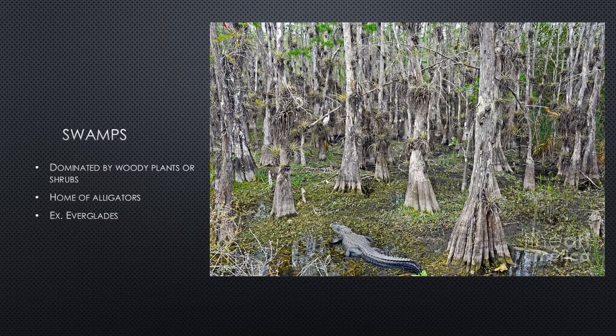Another type of wetland is swamps. Unlike marshes dominated by grasses, swamps are dominated by woody plants or woody shrubs. An example is the Everglades in South Florida, where you can see cypress trees — woody trees that are home to the American alligator.